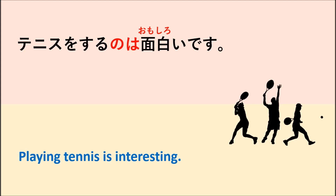What you have to remember is that before NOWA, the verb should be in dictionary form — for example, する (suru). And after NOWA, it should be the predicate of the sentence, for example 面白い (interesting).